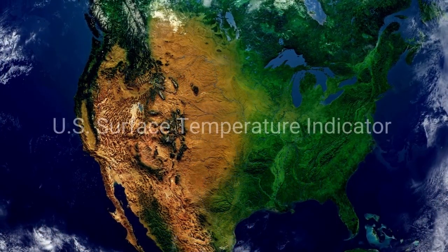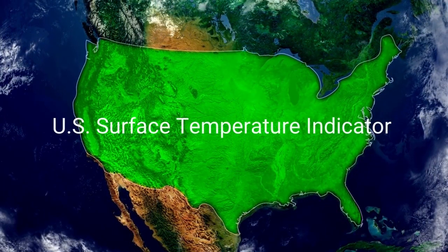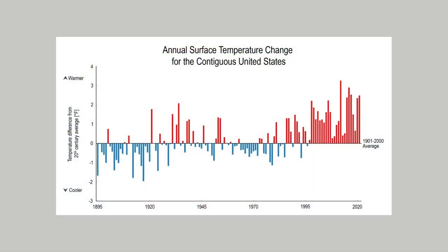Now let's take a look at the U.S. surface temperature indicator. This indicator tracks observed changing temperatures across the continuous United States. Increasing U.S. temperatures reflect the overall warming trend in the climate system. The bars in the graph show the number of degrees by which the average U.S. temperature for each year differs from the average U.S. temperature during the last century.